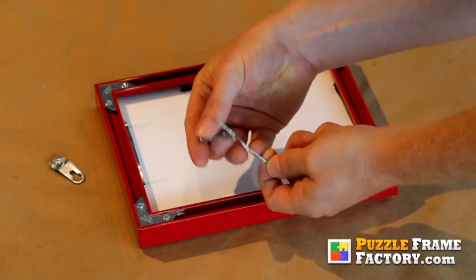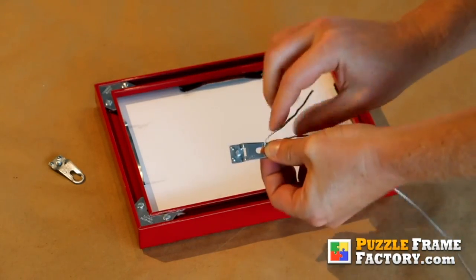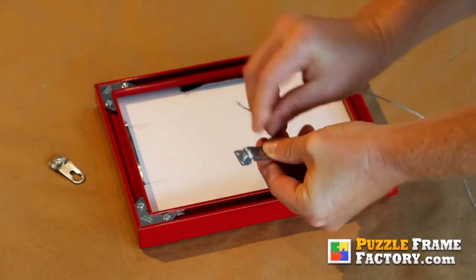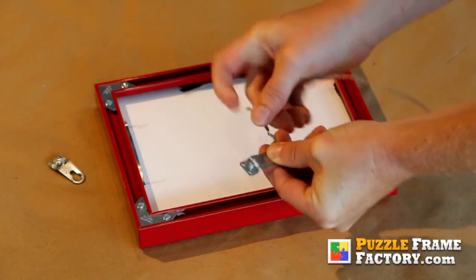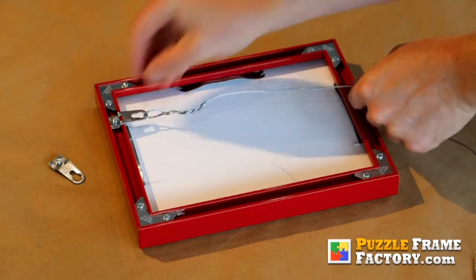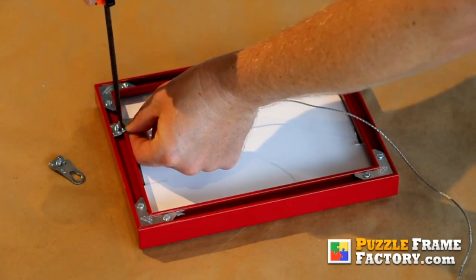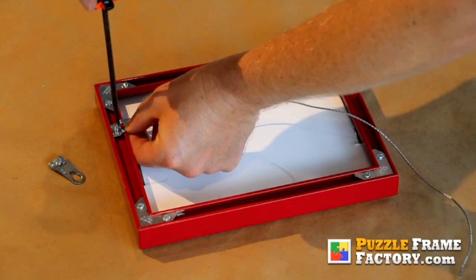The hanging wire is threaded through the hardware piece with the loop. I'm going to twist the wire. Then attach it to the frame rail and tighten the screw with the screwdriver.